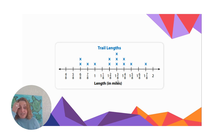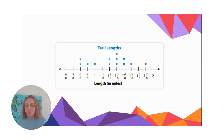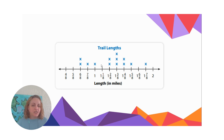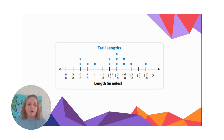We could also ask: how many trails are between one and two miles long? We look at the one and the two and count all the x's that fall between them. That gives us ten trails between one and two miles long. And there are three trails that are less than one mile long.